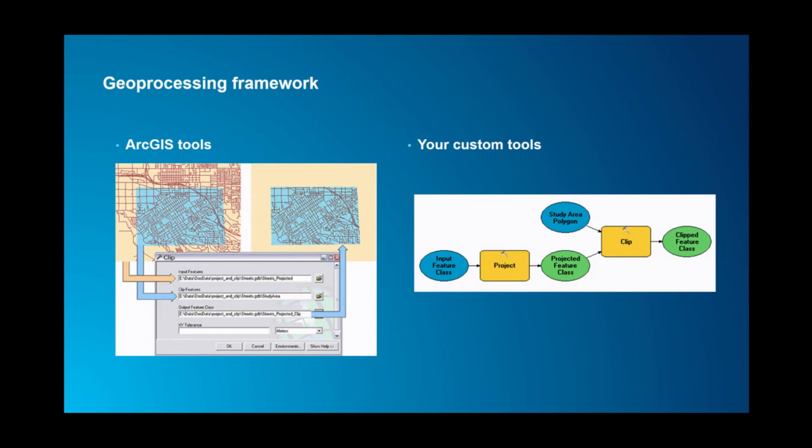There's an example on the left — the clip tool — which is an auto-generated UI built into ArcGIS. On the right is an example of a custom tool where you chain multiple tools: first performing a project to move an entire layer from one coordinate system to another, then performing a clip to extract or subset that data as part of your analysis workflow.